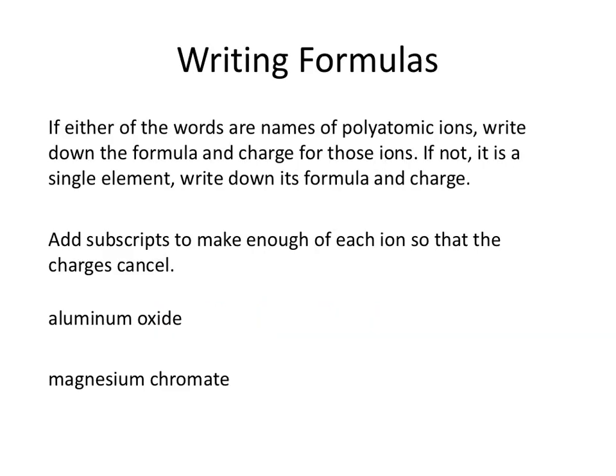When you're going to write chemical formulas, notice that every compound has a cation and an anion, or the beginning and the end. If either of the words are names of polyatomic ions, write down the formula and charge for the ions. If not, it's a single element, so just write down its formula and charge. Then add subscripts to make enough of each ion so that the charges cancel. All of these compounds are going to end up being neutral.